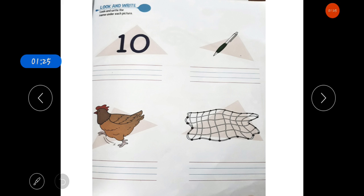Look and write the name under each picture. You have to look at the picture and then write the name of this picture. Like, which picture is this? Ten. So, you have to write here ten in proper writing. You have to write ten in proper writing. Clear?